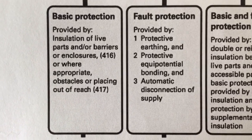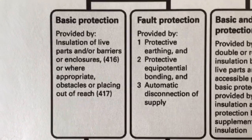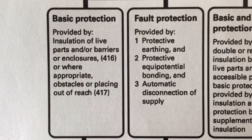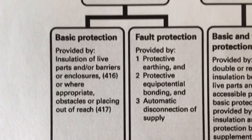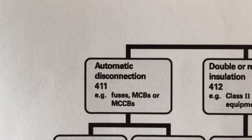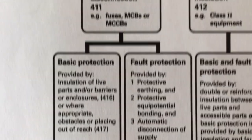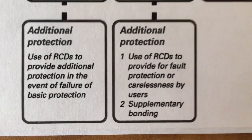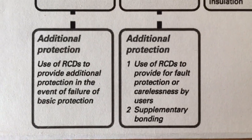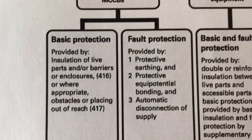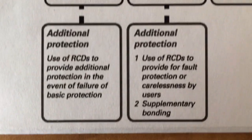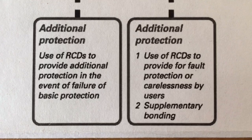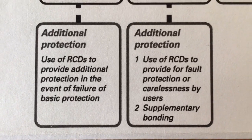Fault protection is what happens under fault conditions: earthing and bonding, fuses and circuit breakers, in a nutshell, and that's part of a system called automatic disconnection of supply. Now additional protection, we've got additional protection in the event of the failure of either basic or fault protection, or to protect us against carelessness by users.